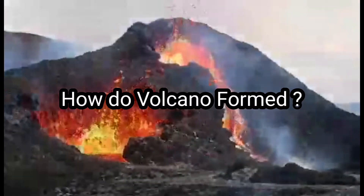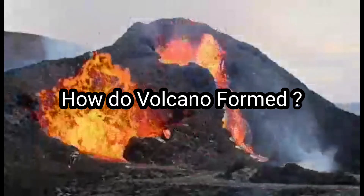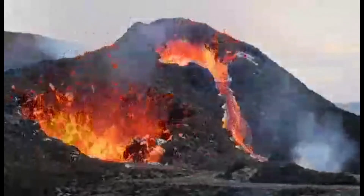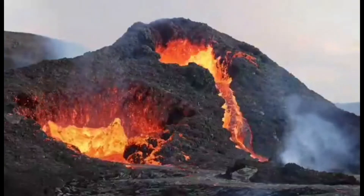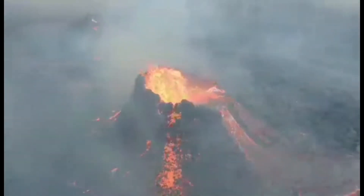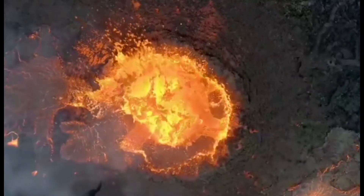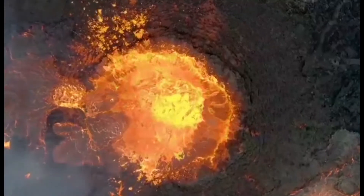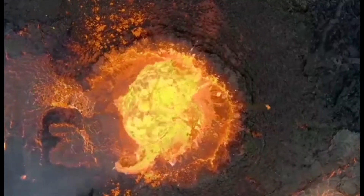How do volcanoes form? Volcanoes are formed when tectonic plates move under one another. Generally, a massive plate moves under or subducts a denser continental plate. Molten rock, gases, and ashes are released from the opening created by the activity between the tectonic plates. Hot molten magma solidifies as it cools, creating the typical shape of the volcano.